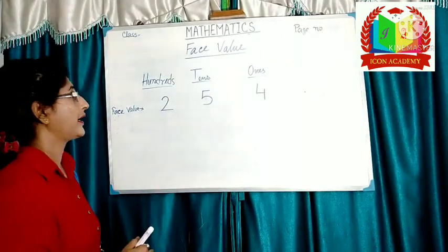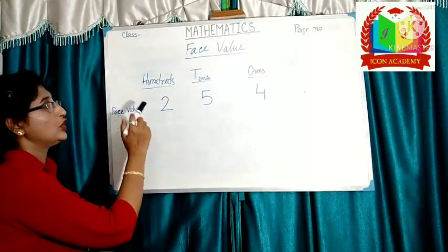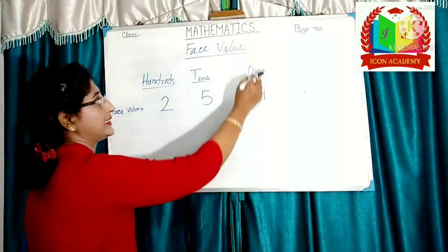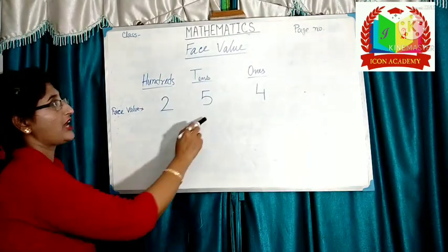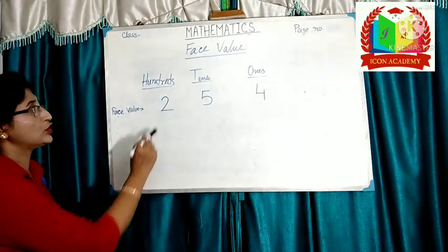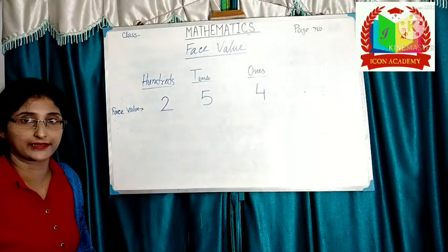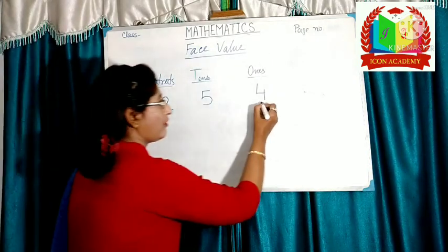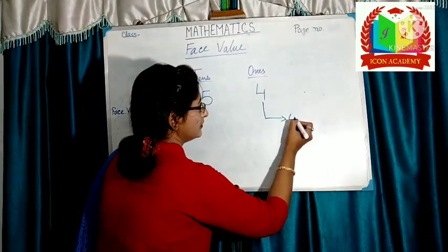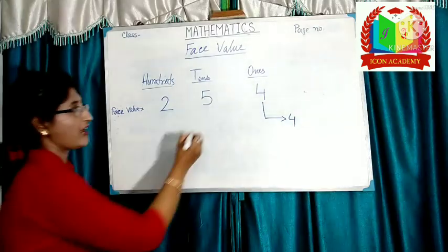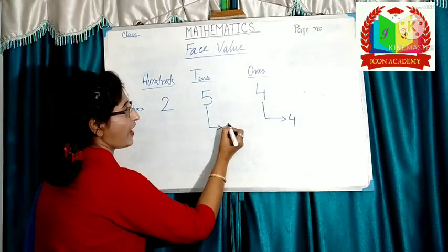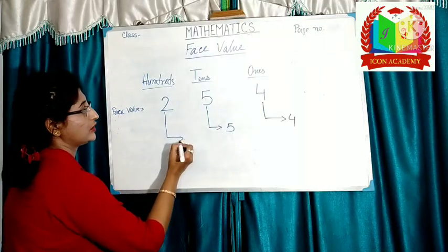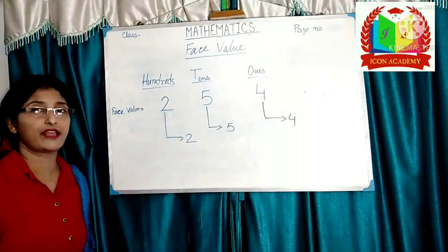One more example: here the number is 254. 4 is in 1's place, 5 is in 10's place, and 2 is in 100's place. So, phase value of 4 is 4. Phase value of 5 is 5. Phase value of 2 is 2. It never changes.